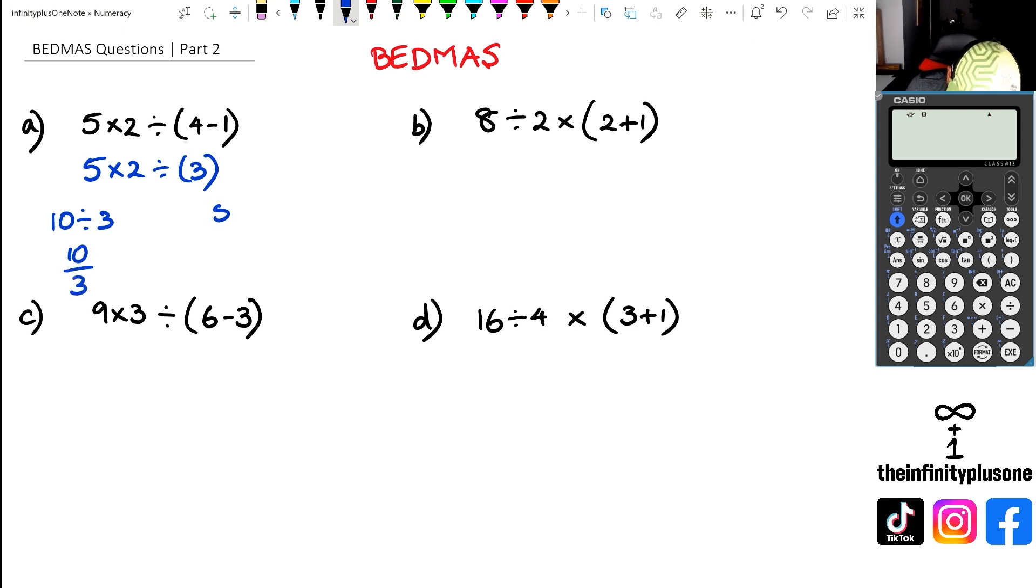Or the other way I could have done it is 5 times 2 divided by 3 could be written like that, and then 5 times 2 is 10. So either way I do it, I'm actually going to end up with 10 over 3.